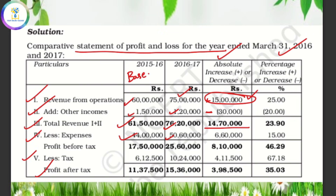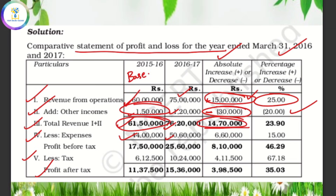For example, 15 lakh divided by 60 lakh into 100 gives 25%. If you calculate for the next year, 30,000 divided by 1,50,000 into 100 is 20%. Then 14,70,000 divided by 61,50,000 into 100 is 23.90%.